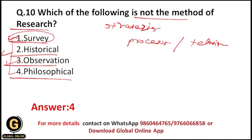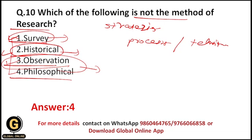In the survey method, we ask questions to respondents and they give answers. In the historical method, we collect data from the past — through people, pictures, or recorded videos. Observation is one of the most commonly used data collection methods in research, used across different research types. Within observation, strategies include participant observation and non-participant observation. All of these are methods of research, but philosophical is not.